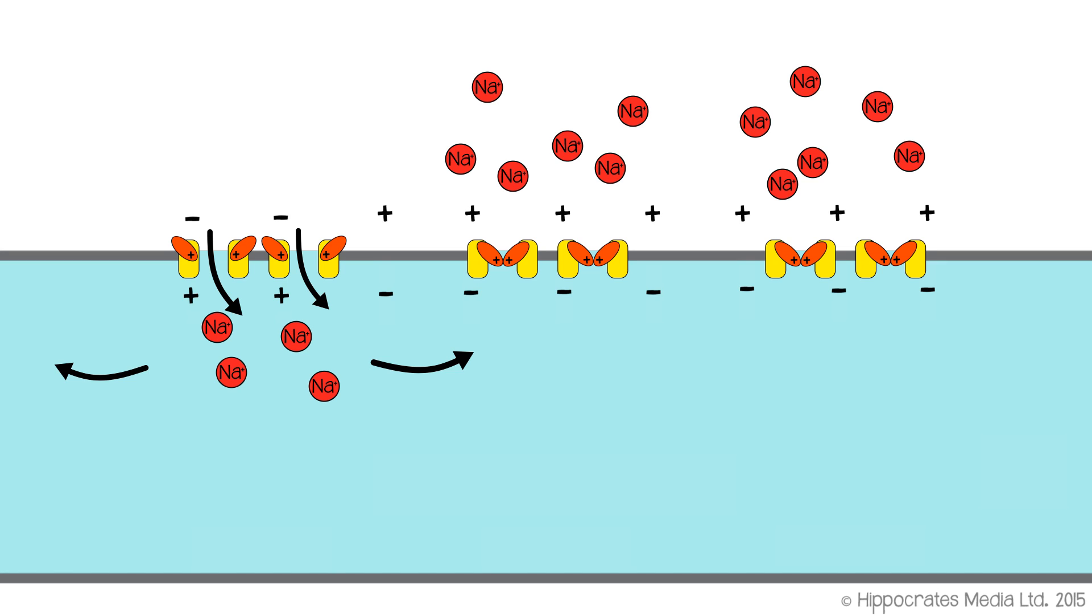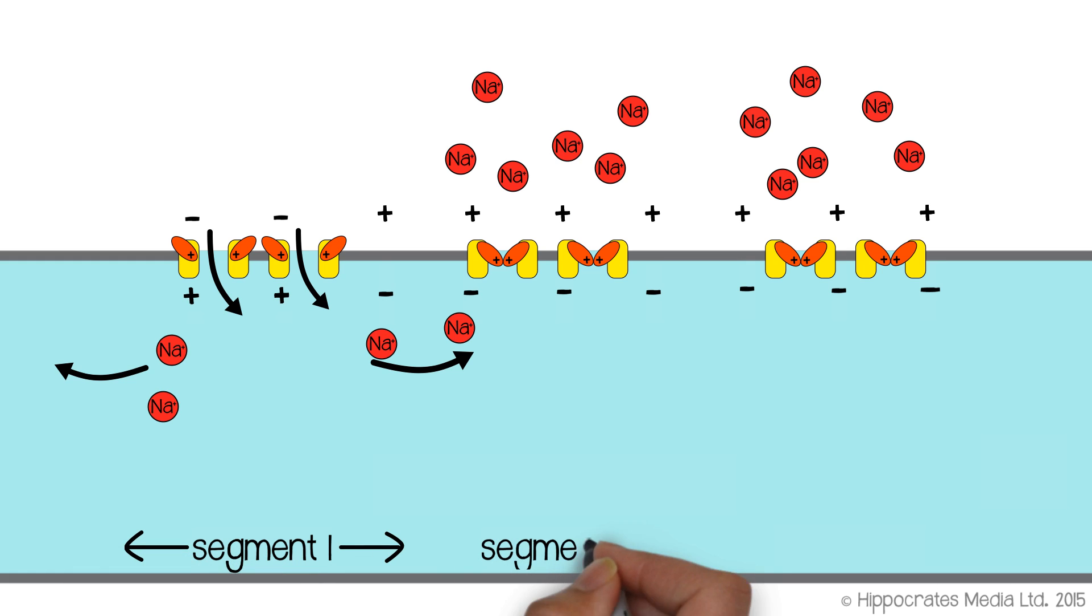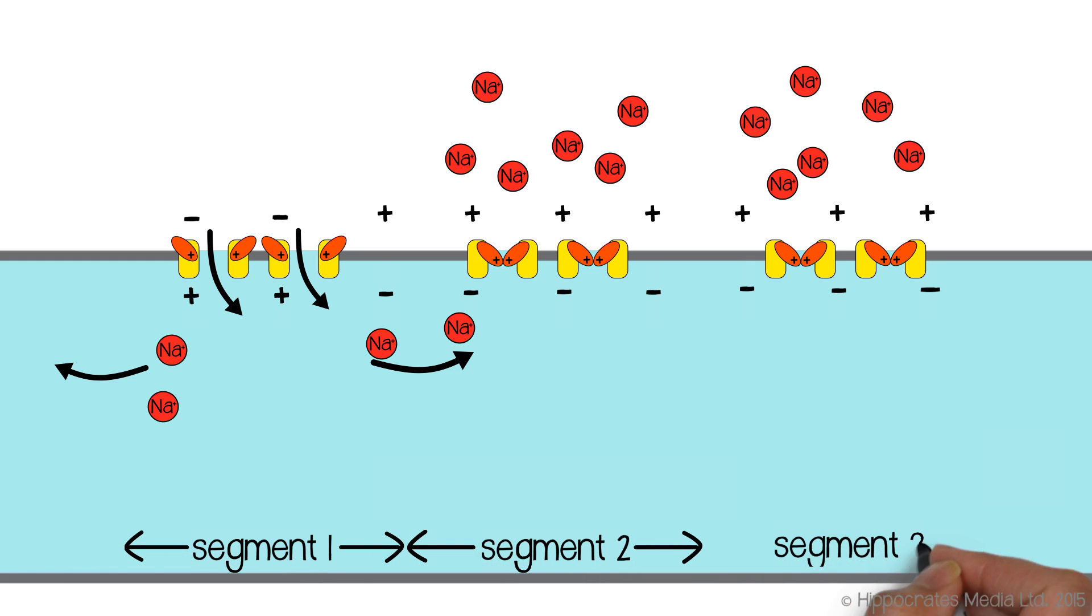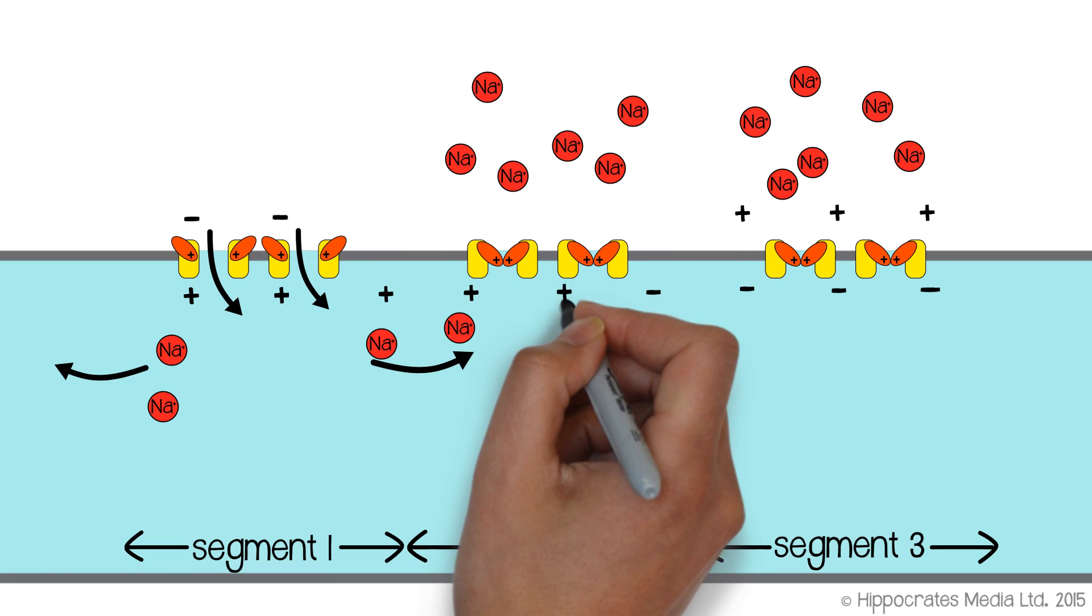If you imagine dividing the axon into segments, and we'll say that our first segment is where the action potential is taking place, this region is depolarized. The next segment isn't depolarized yet, and so its resting membrane potential is minus 70 millivolts, the interior is negative. So what we have is two adjacent segments. The one where the action potential is occurring, it's positive inside. The one next door, it's negative inside. So the positive ions that have come in during the action potential would really like to move along the axon to the negative region. And so they do.